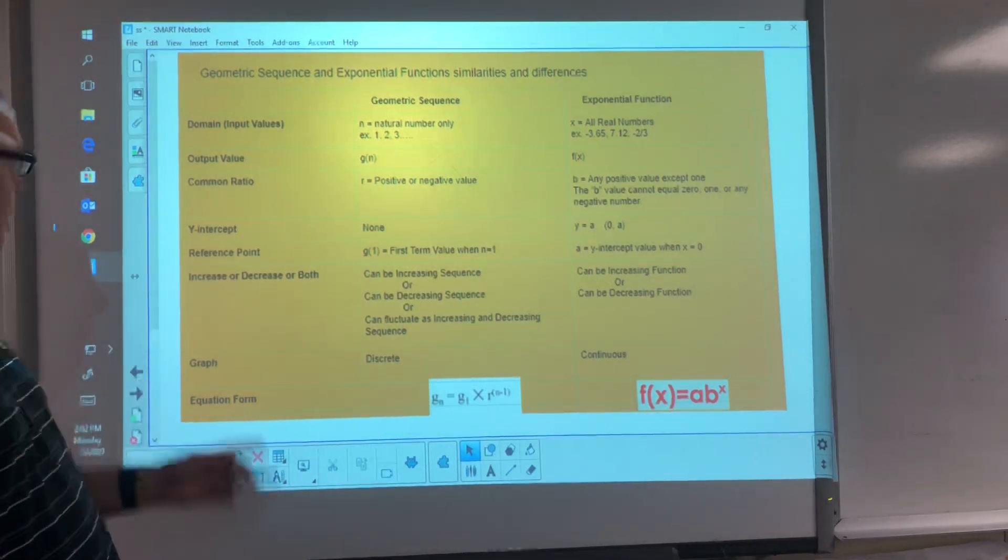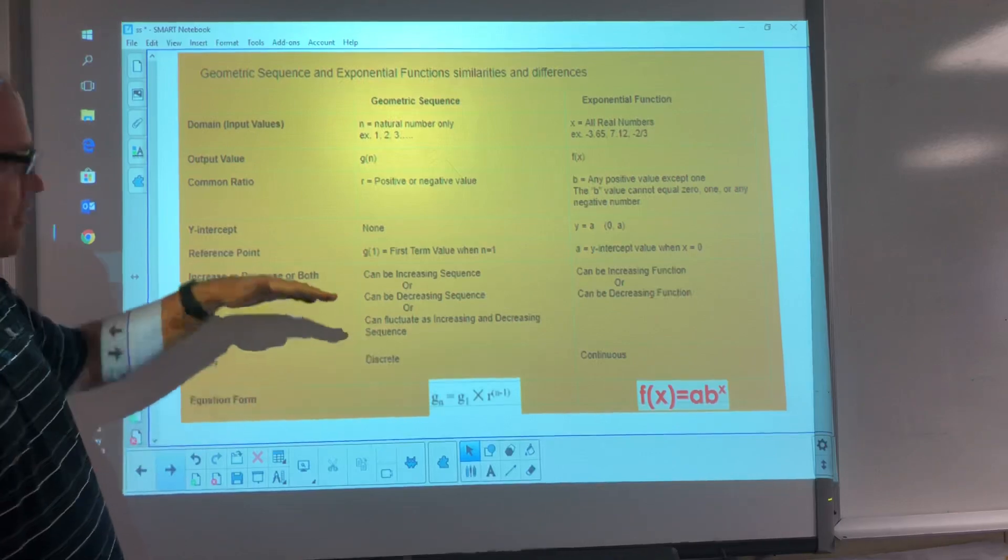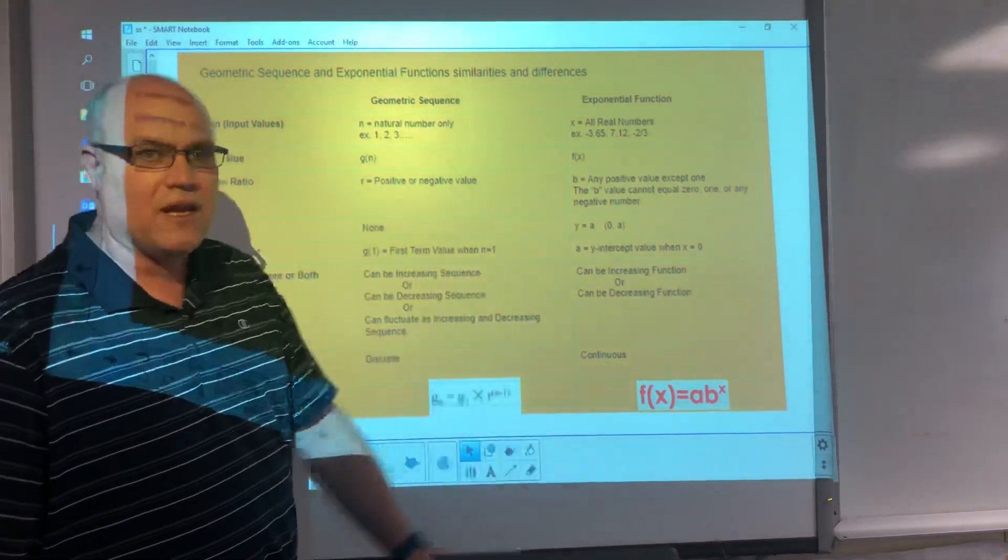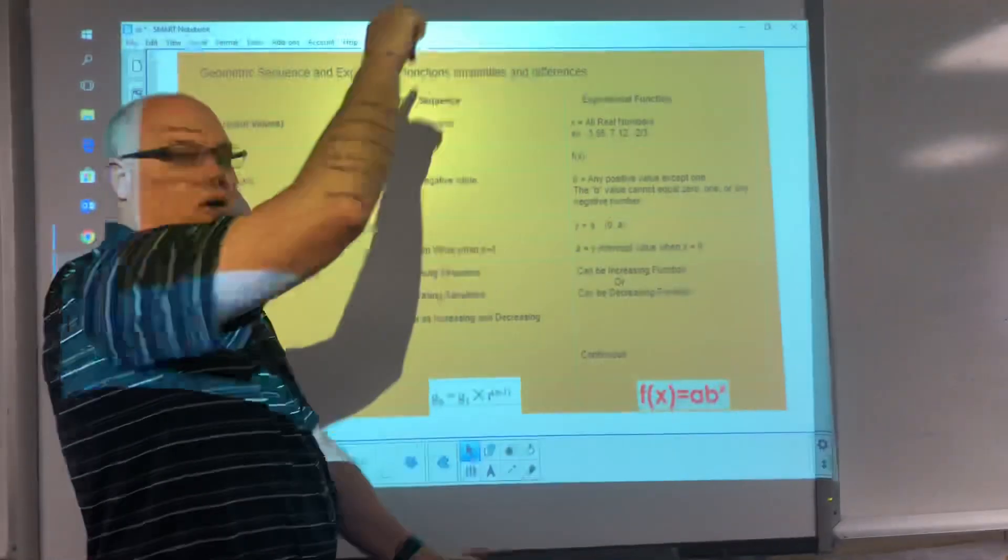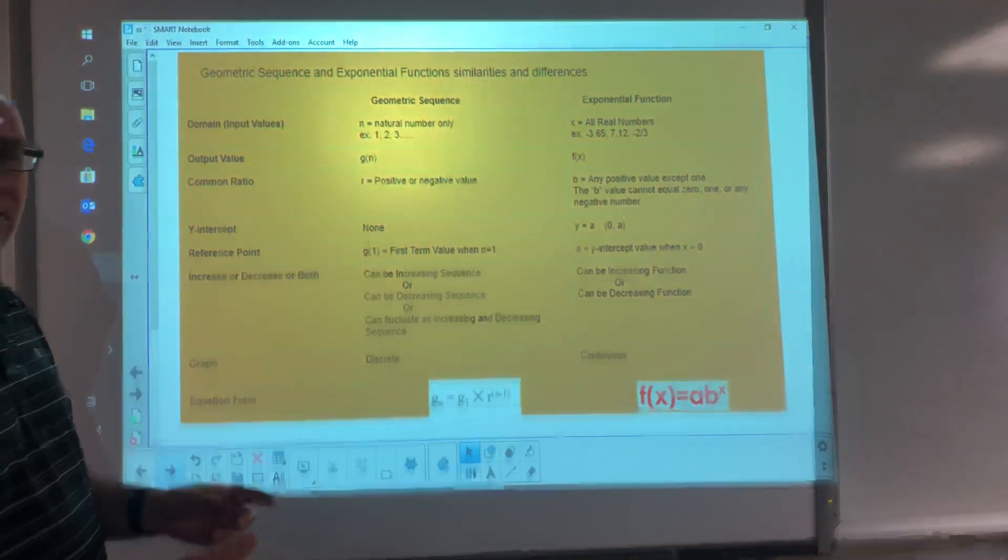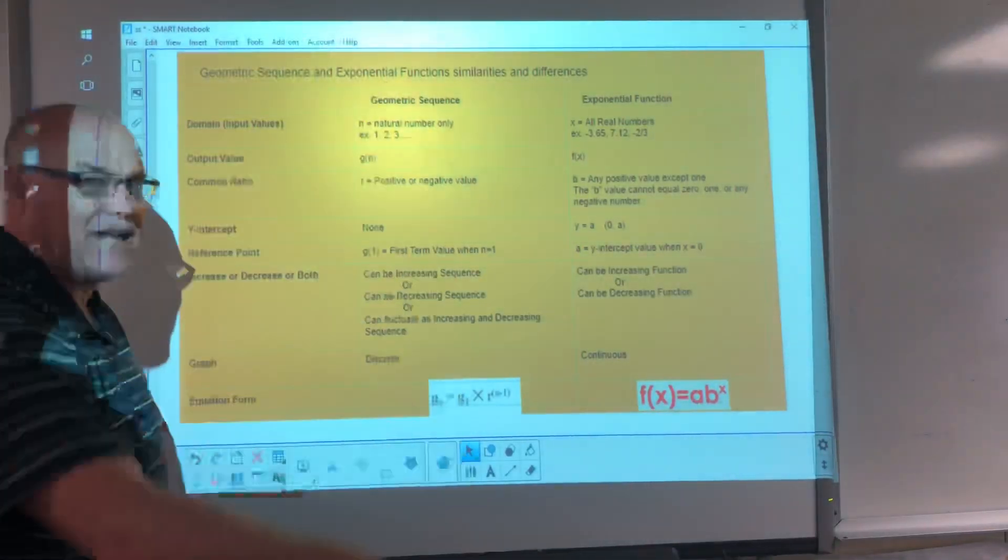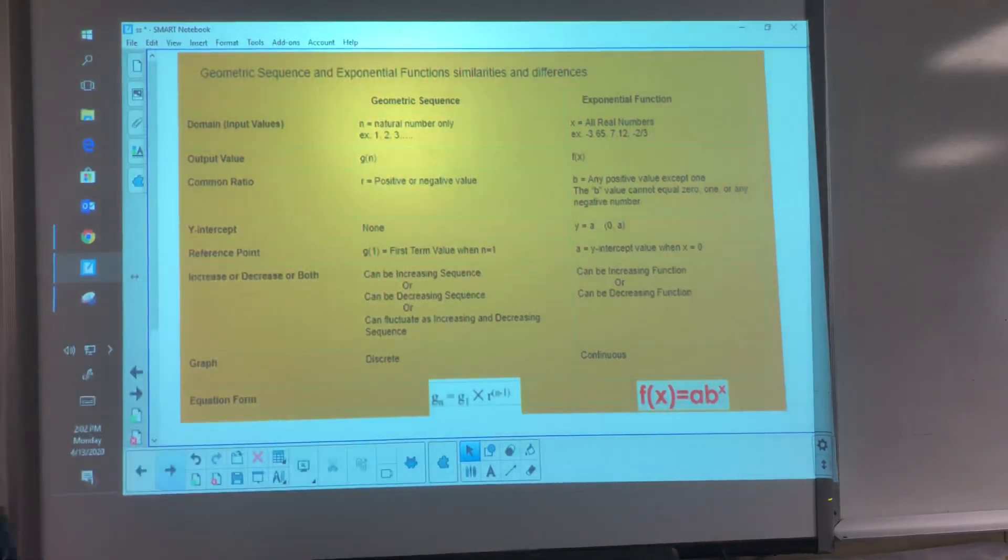All right. Now, increasing, decreasing, or both. Geometric sequences, we've seen them that are just increasing. We've seen them where they're just decreasing. And we've seen them where they kind of go up, down, up, down, up, down, over and over. Because if the r value is negative, right, as you keep multiplying by a negative number, well, it becomes positive, and it's negative, and it's positive, and it's negative. So it goes back and forth, back and forth. So we've seen that with our geometric sequences.